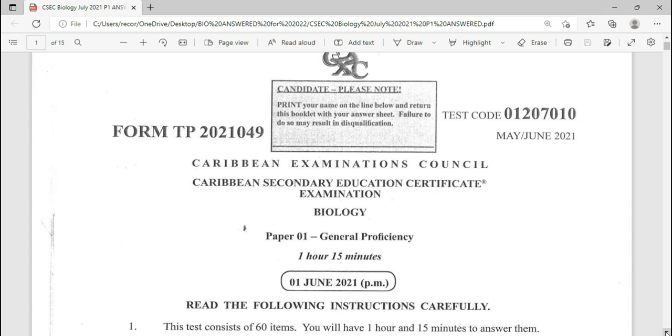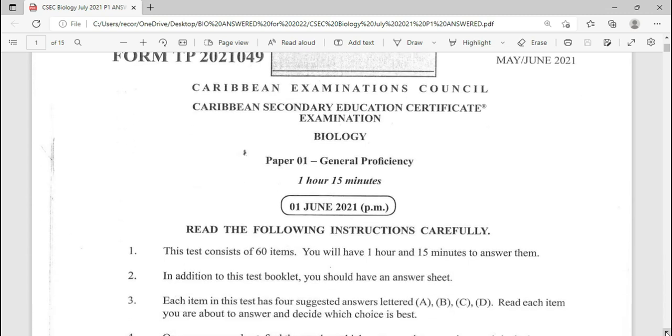We're going to be doing the 2021 May-June examination, biology paper one, and we're going to be going through it very quickly as students are requesting this paper for the exams. So let us go. 2021, it is.